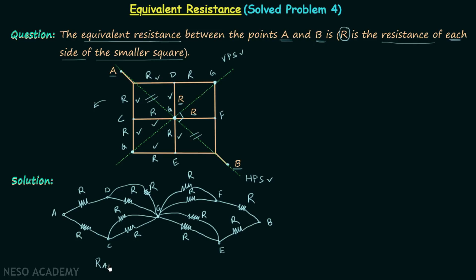When you solve this network, you will get the equivalent resistance equal to 3/2 R — that is our answer. Now I want to show you how you can solve the same problem with a little less calculation when you use rule number 2 for when we have the vertical plane of symmetry.